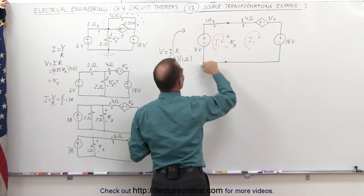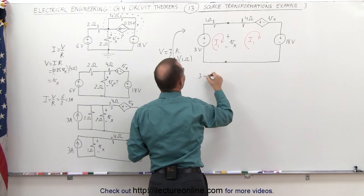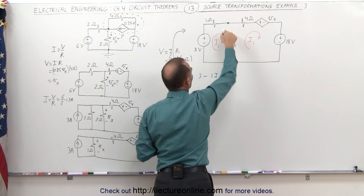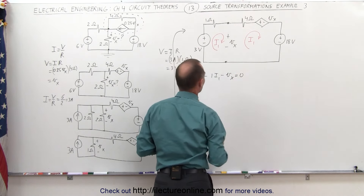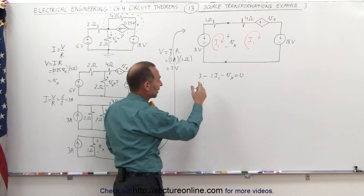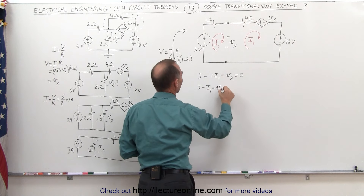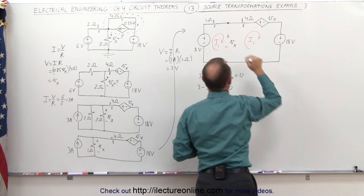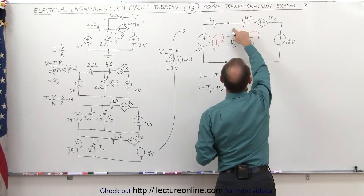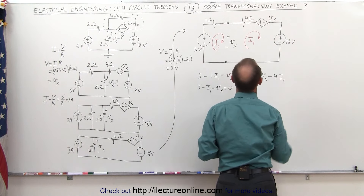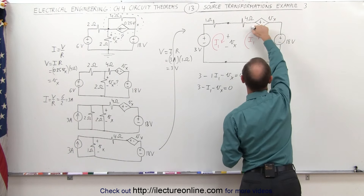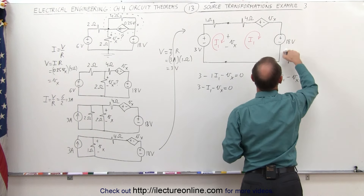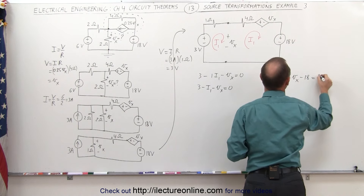Starting from here, I have a 3 volt rise, minus a drop across the 1 ohm resistor which is I1 × 1, then minus V_X across the gap, and that sums to zero: 3 − I1 − V_X = 0. Going around the second loop: starting from this point, jumping across the gap gives plus V_X, going across the 4 ohm resistor gives minus 4 × I1, then minus V_X, and minus 18 volts, summing to zero.